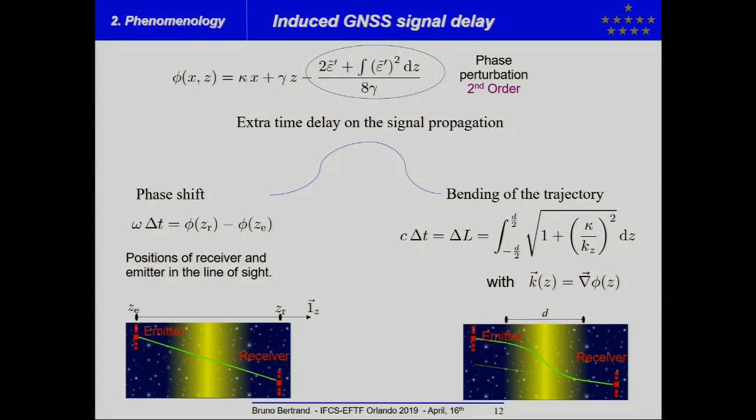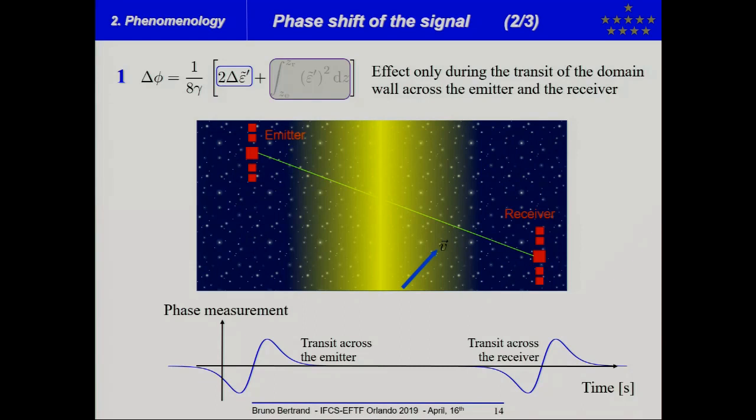And so, you have, in the perturbation of phase, you have two parameters. And for each parameter, you have two effects, phase shift and bending of the trajectory. So, in total, you will have four effects on GNSS signals. I will start with the description of the phase shift of the signal.